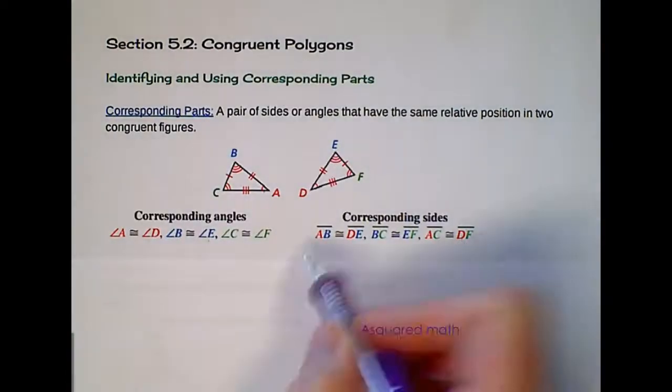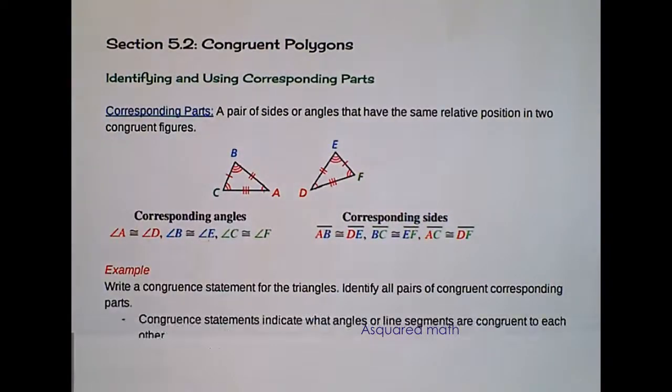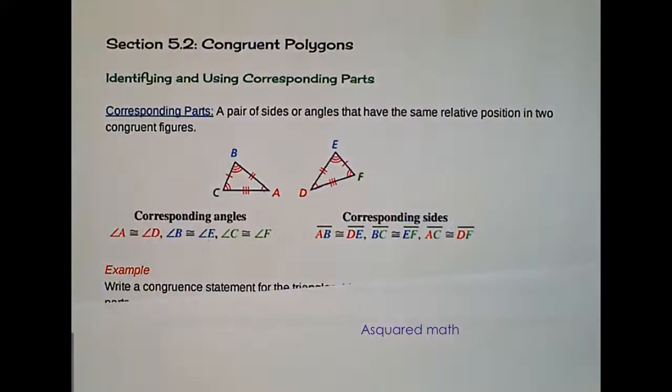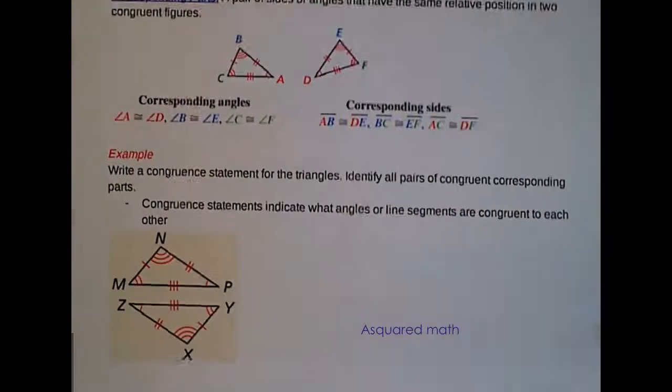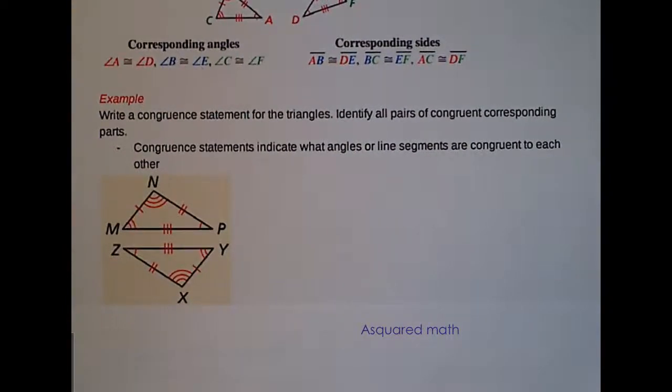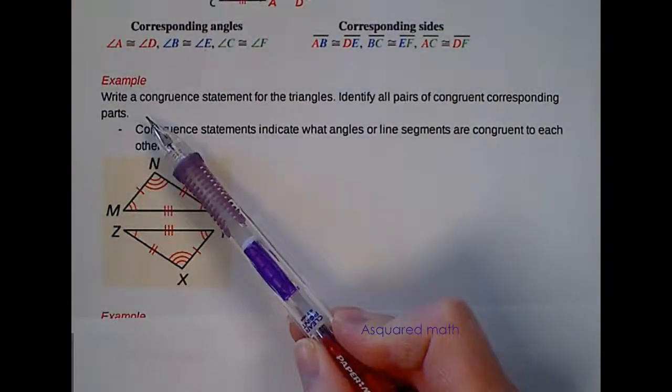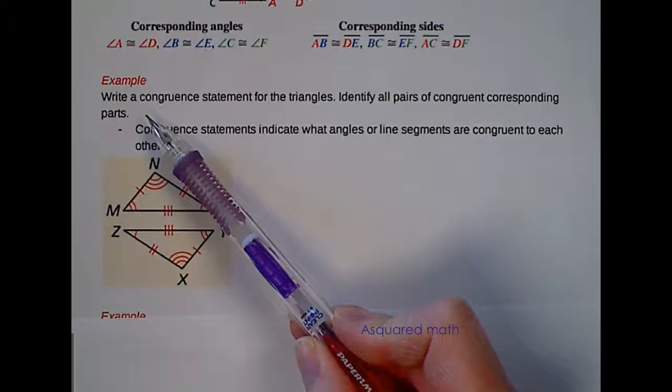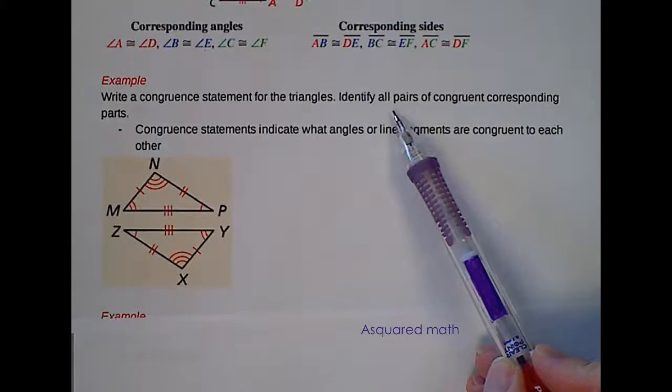These markings or notation up here are known as congruence statements. So in this example we're about to do, it's asking us to write some congruent statements for the triangles given below. I'll leave those up there so you can refer to those. The example says to write a congruent statement for the triangles and identify all pairs of congruent corresponding parts.